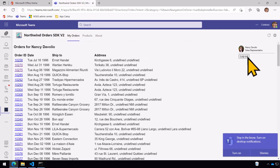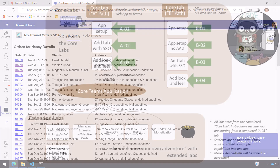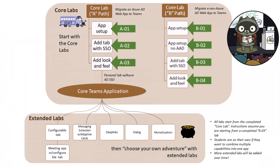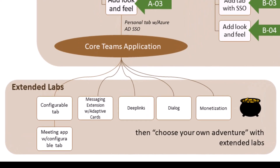The navigation of the app has been replaced with tabs — multiple tabs inside of Microsoft Teams — but almost all of the code has been reused and we have single sign-on with Azure Active Directory. For the purposes of App Camp we call this personal tab application with single sign-on the core Teams application, because all the other labs build on that application. The extended labs are where you can choose your own adventure — you can do them in any order you want, so choose the labs that interest you the most and have fun.